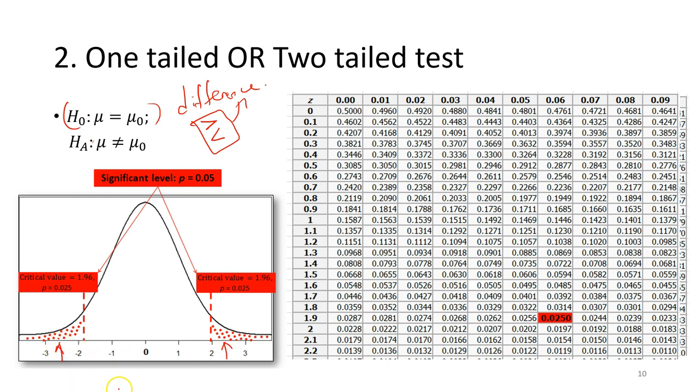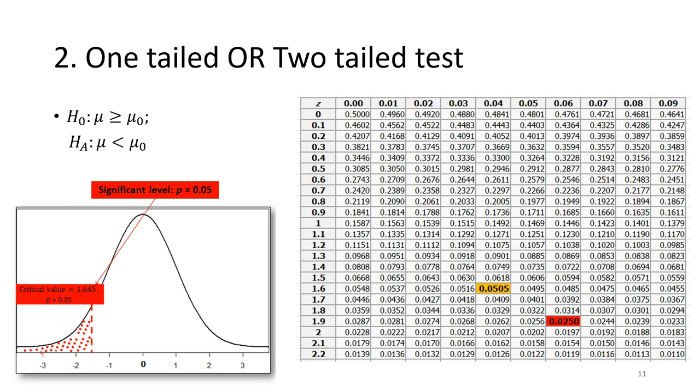However, sometimes we ask a more specific hypothesis. We want to check whether our sample is from a population where the population mean is larger than a certain value. This is another type of statistical hypothesis.